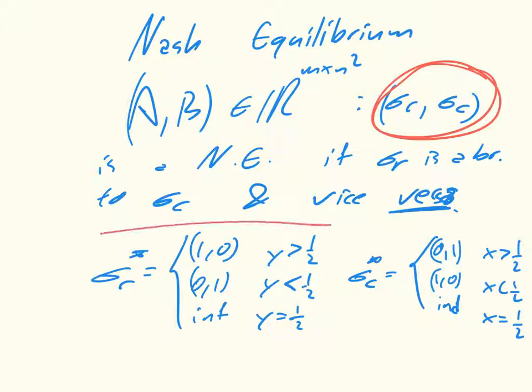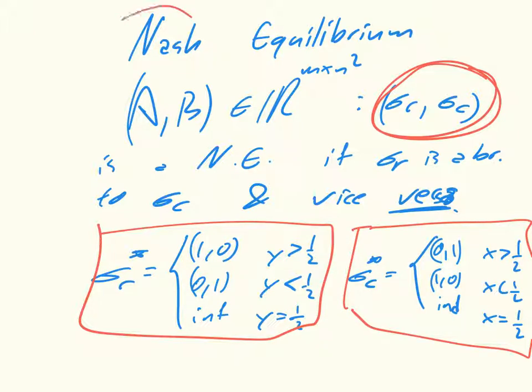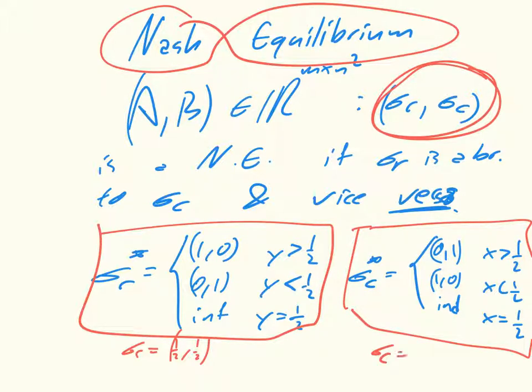Okay, so we have these two knowledges about what the best response is, and we can get the Nash Equilibrium for this game simply by seeing that if both players play a half, so if sigma R is equal to (a half, a half), and sigma C is equal to (a half, a half)...